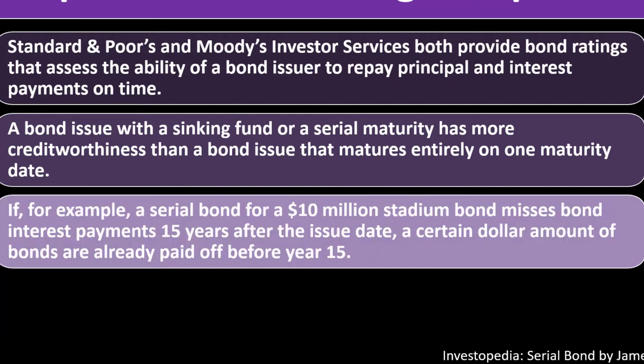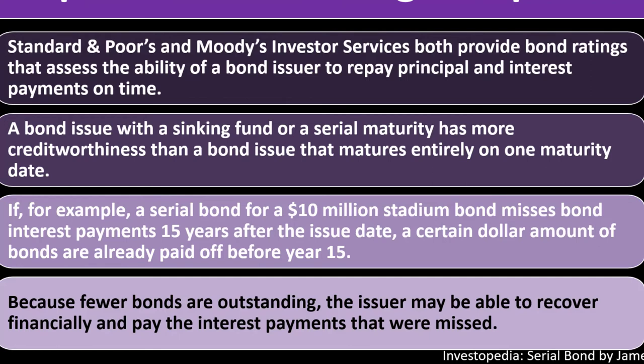For example, if a serial bond for a $10 million stadium bond misses interest payments 15 years after the issue date, a certain dollar amount of bonds are already paid off before year 15. Because fewer bonds are outstanding, the issuer may be able to recover financially and pay the interest payments that were missed.